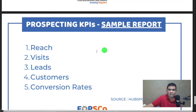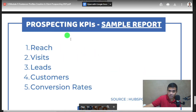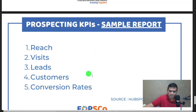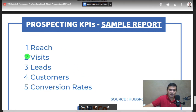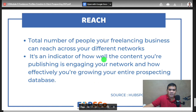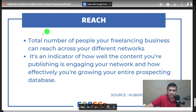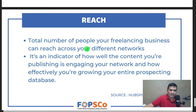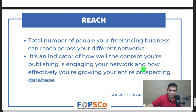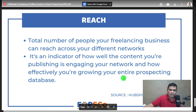Prospecting KPI sample report: visits, leads, customers, and conversion rates — these will be your measurements. Total number of people your freelancing business can reach across your different networks is your reach — very important. How many connections do you have? How many likes and shares? It's an indicator of how well the content you're publishing is engaging your network and how effectively you're growing your overall reach.